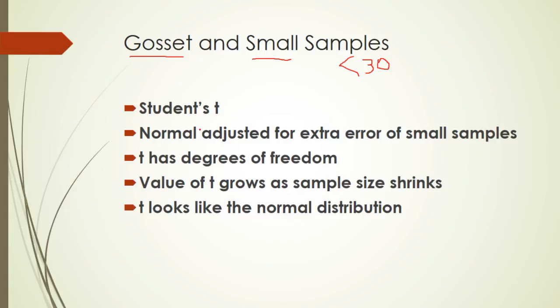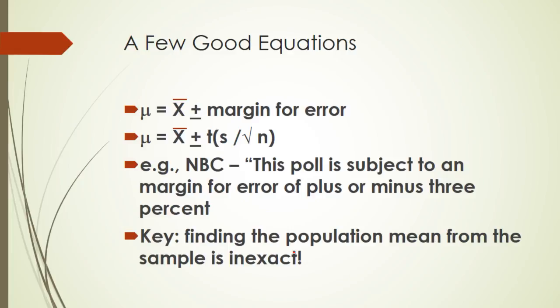So we're going to do something in this case called the student's tea distribution, which is a normal distribution. It's a tea distribution. It looks kind of like the normal distribution. The student's tea is the normal distribution adjusted for the extra error that happens when you have small samples. Tea has degrees of freedom. And we all remember what those were. So the value of tea changes as the sample size shrinks. Tea gets bigger. It adjusts for the fact that small samples have bigger chances for error. So it pretty much looks like a normal distribution has what we say, fatter tails. It has fat tails, which means there's more probability in the tail. Tea looks just like the normal distribution except it's fatter in the tails. It's got more probability in the tails. And again, the value of tea is going to get bigger as the sample size gets smaller. It's adjusting for the sample size. Small samples.